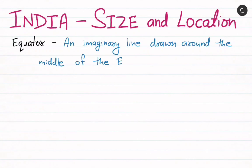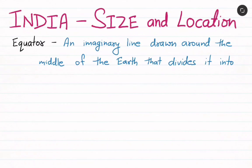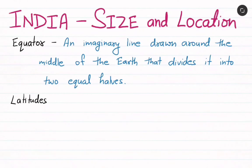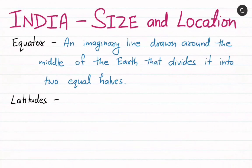The Equator is an imaginary line drawn around the middle of the Earth that divides it into two equal halves — that is the Northern Hemisphere and Southern Hemisphere. The Equator is at 0 degrees and divides the Earth into two equal halves.